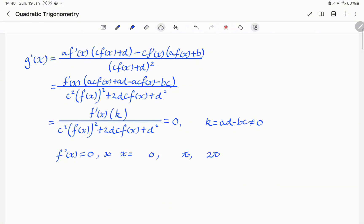In this case, we have x is equal to 0, pi, 2 pi, so f of x is equal to 3, negative 1, and 3, and therefore, g of x will be equal to 3a plus b over 3c plus d, b minus a over d minus c, or 3a plus b over 3c plus d, respectively.